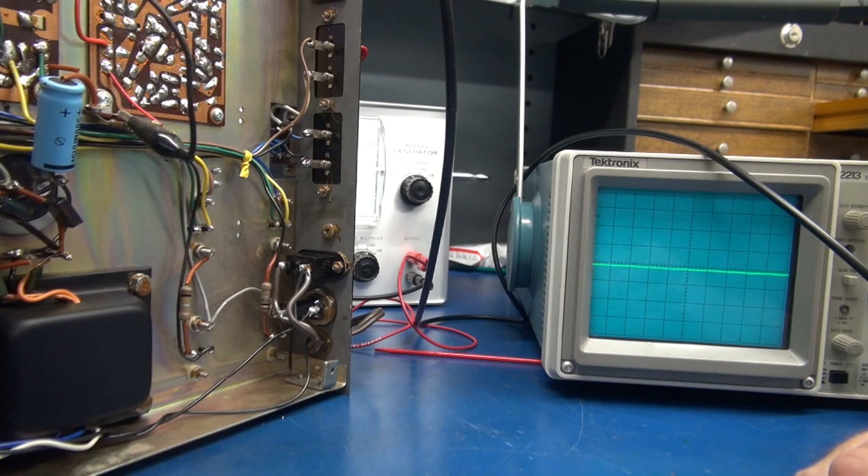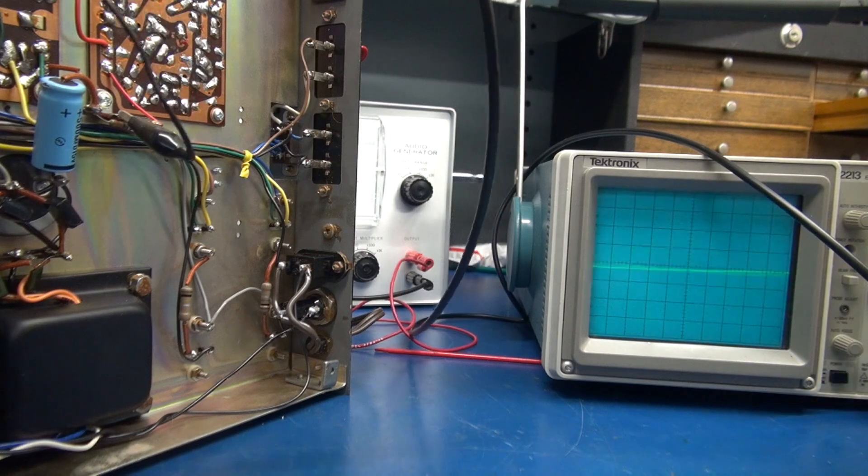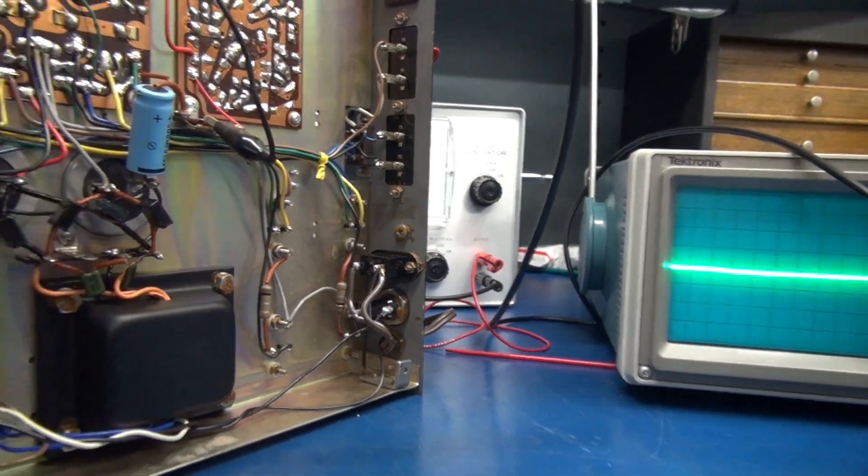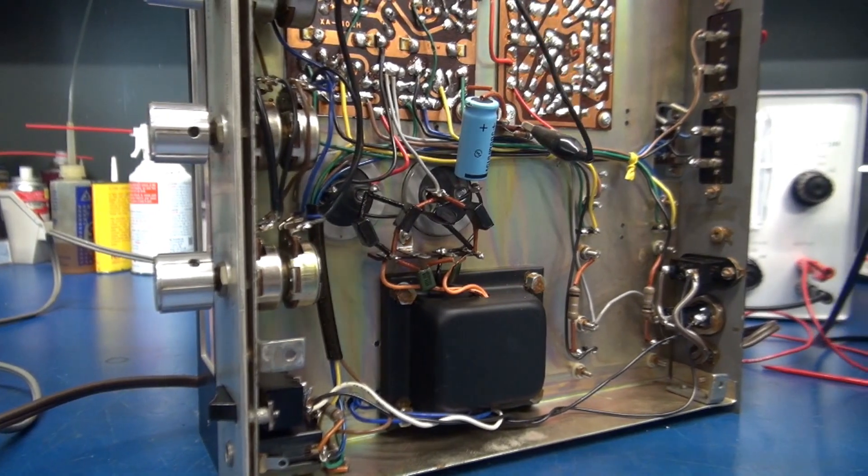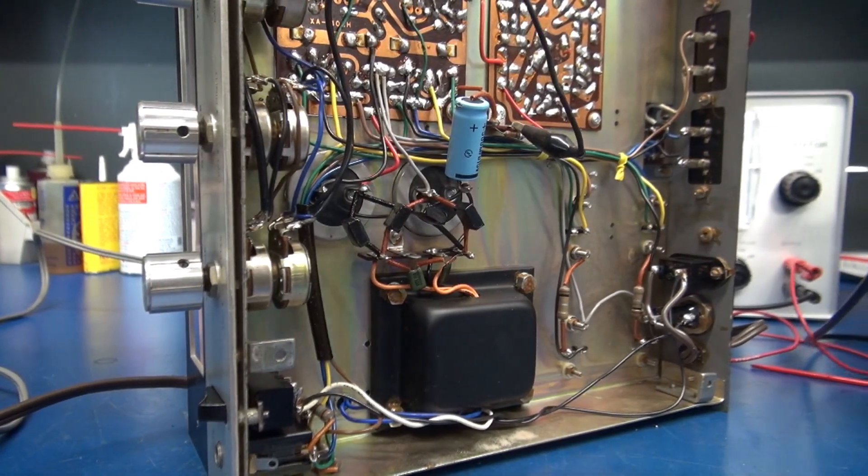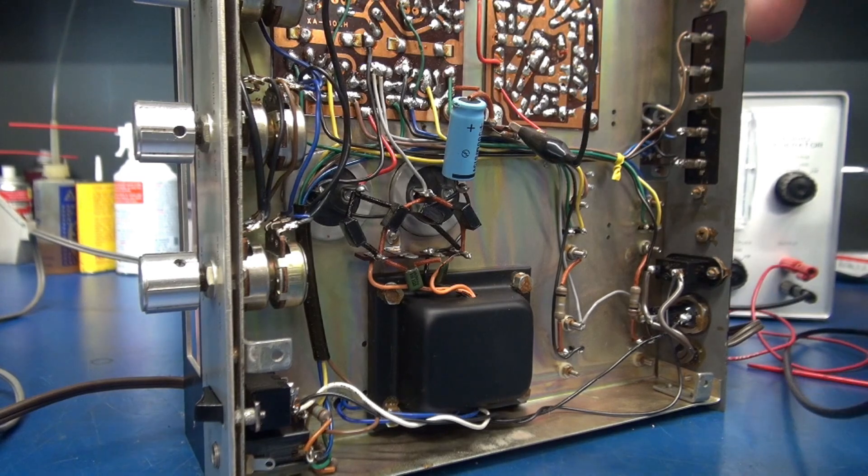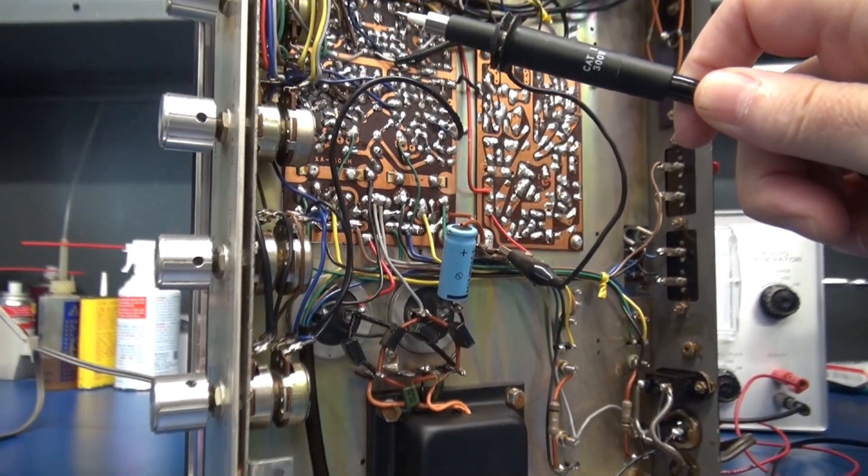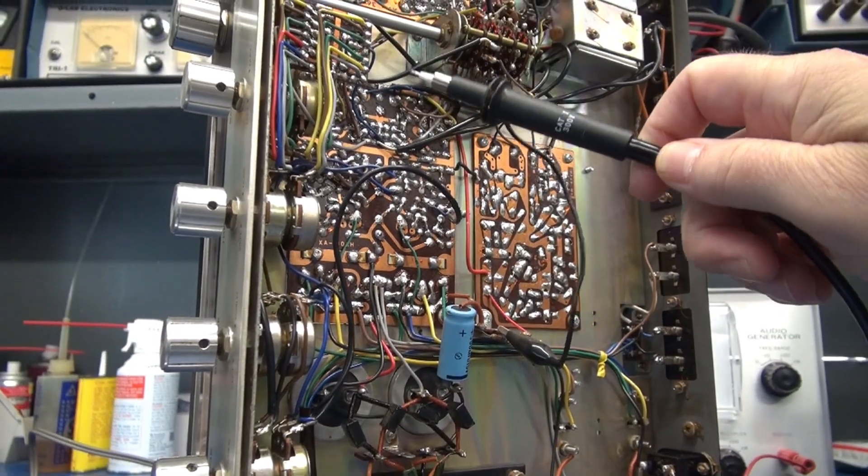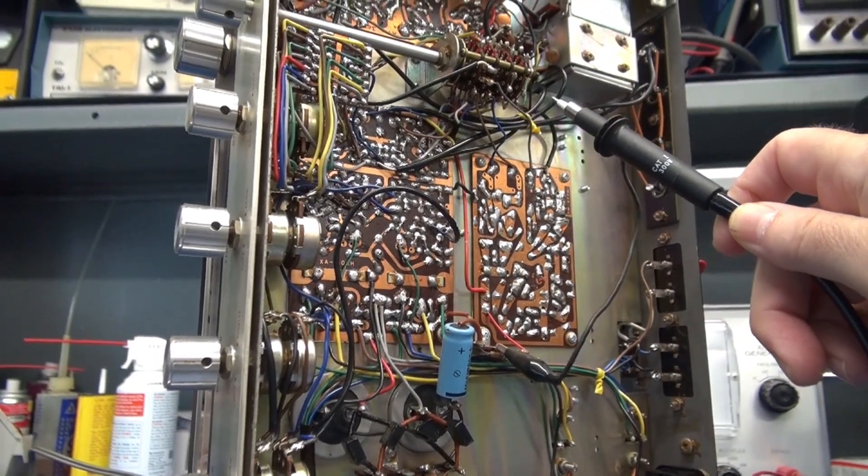Here is the left channel. You can see there's absolutely nothing, so the signal is not getting to the balance control. So if we work our way backwards, I know that the balance control comes up through this tone circuit.